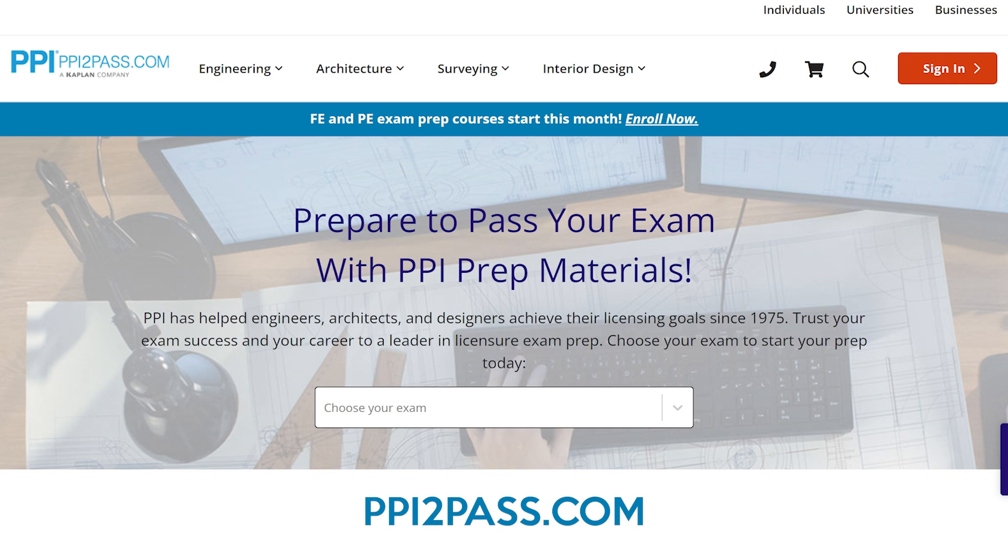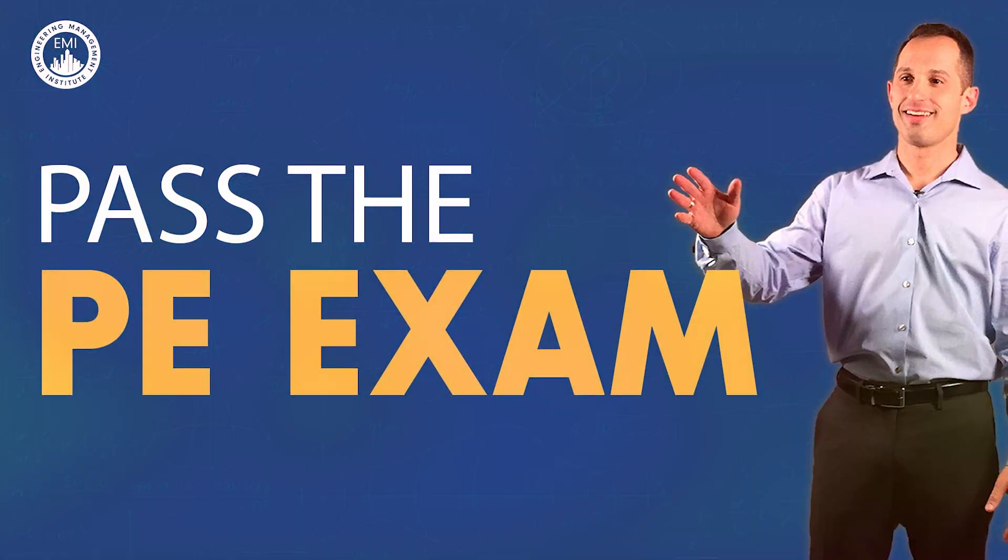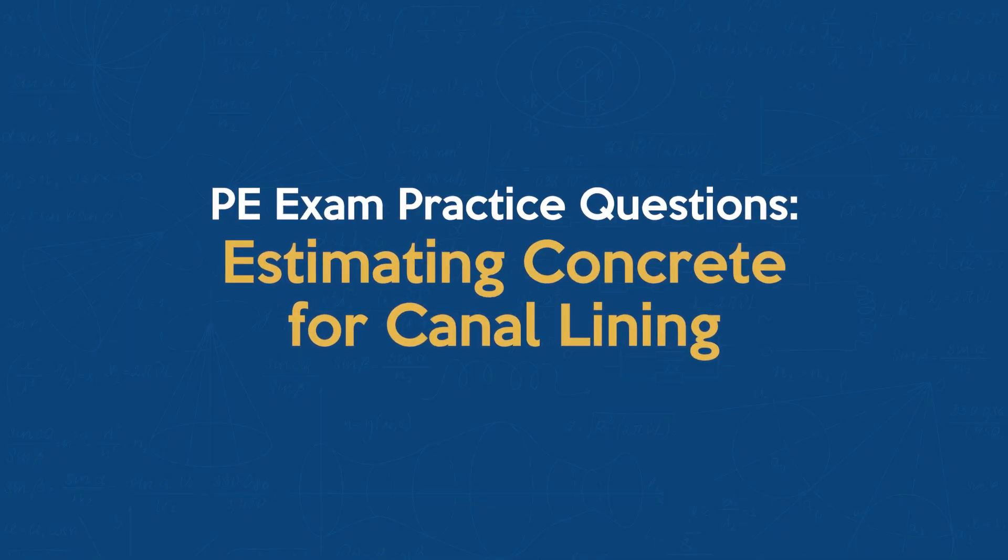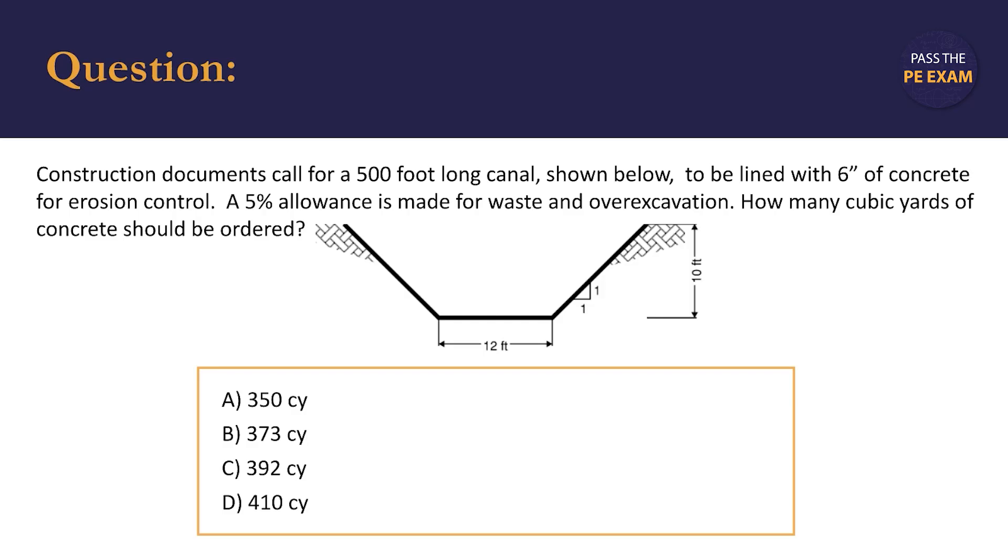Check out PPI today at ppi2pass.com to see all the options available for PE exam prep. Let's dive in. Hello everyone, in this problem we have a great real-world example that might show up on the PE exam. We're estimating the amount of concrete that will be needed to line a canal and we're told that the construction documents call for a 500-foot long canal lined with 6 inches of concrete for erosion control.